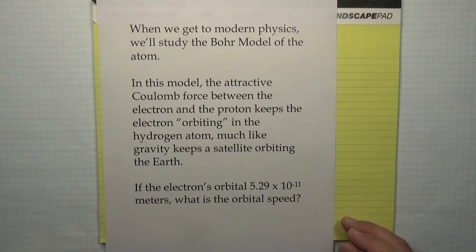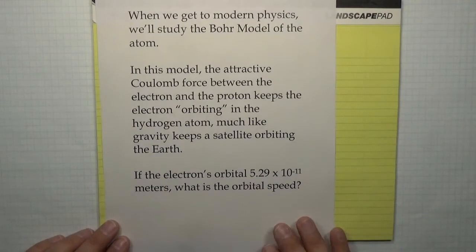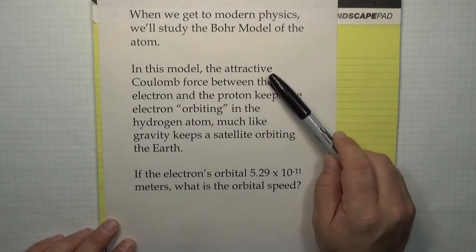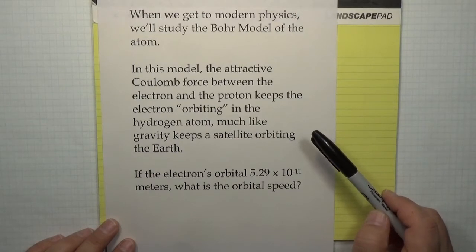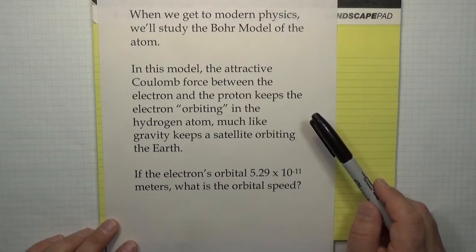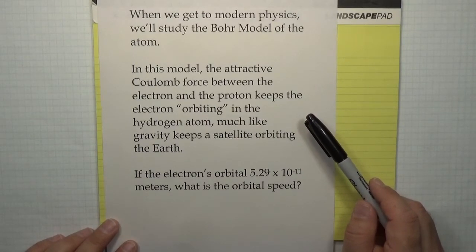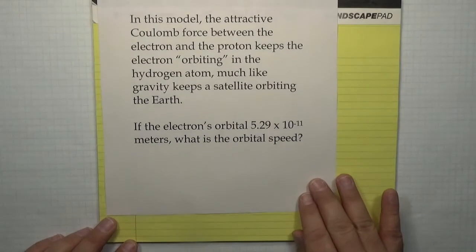It means orbit in exactly the same way that we meant orbit when we studied gravity during first term. So in the Bohr model, the attractive force in the atom is not the gravitational force — it's the Coulomb force between the electron and the proton. It's that central, centripetal force from the Coulomb attraction that keeps the electron orbiting in the hydrogen atom.